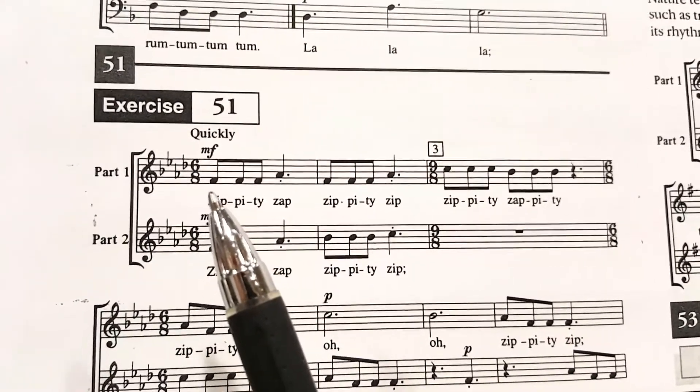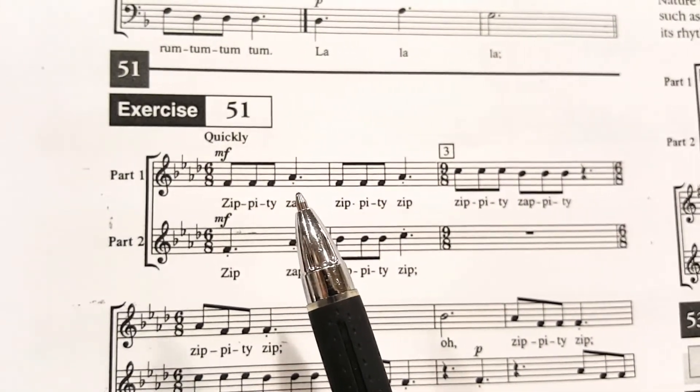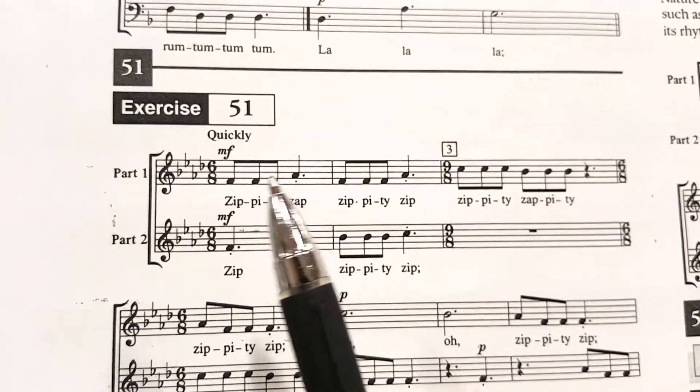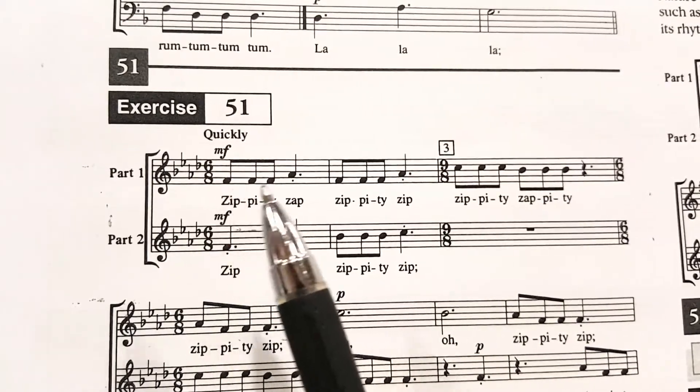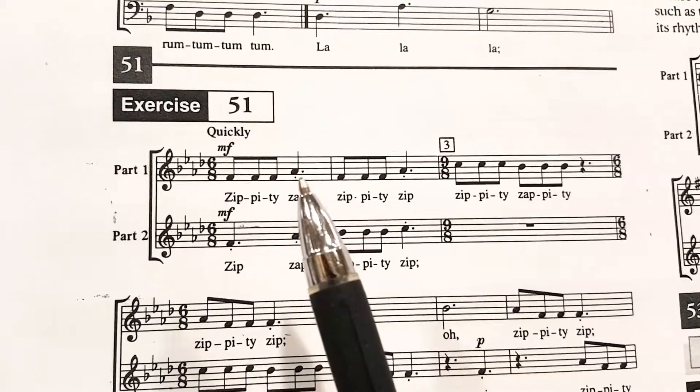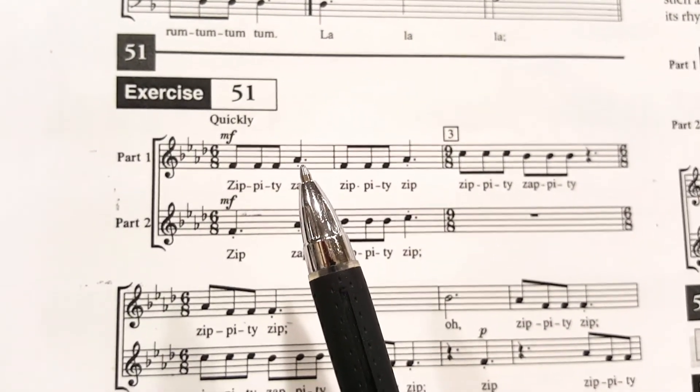So if you're counting the eighth notes, it would be one, two, three. The dotted quarter note in this case would get three beats because you're following the rhythmic rules of the time signature. And it would get four, five, and six. So this is a different way of seeing this dotted quarter note here in this compound meter.